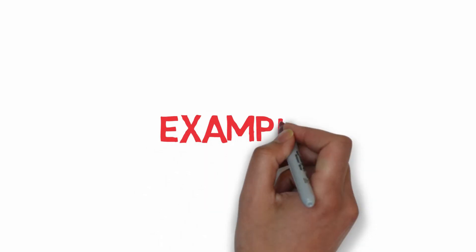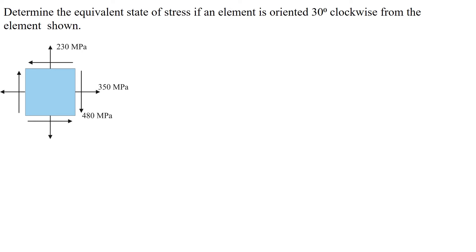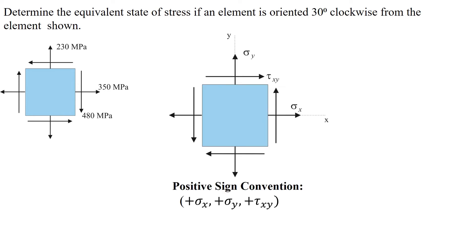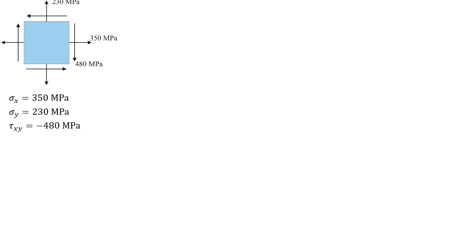To explain the procedure for constructing the Mohr's circle, let's take a look at this example. Determine the equivalent state of stress if an element is oriented 30 degrees clockwise from the element shown. Before we start, we must establish the positive sign convention for stress components sigma x, sigma y, and tau xy. Sigma x is positive because it is in the positive x direction, sigma y is positive because it is in the positive y direction, and tau xy is positive because it is in the positive y direction. Therefore, according to our sign convention, sigma x equals 350 MPa, sigma y equals 230 MPa, and tau xy equals negative 480 MPa.